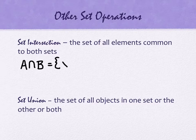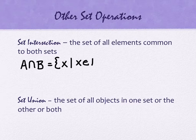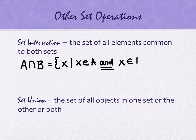Notationally, this is the set of all items X such that X is an element of A, and, that's the key word here, X is an element of B.